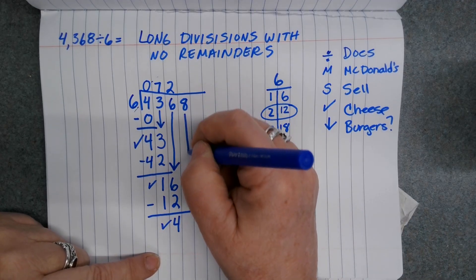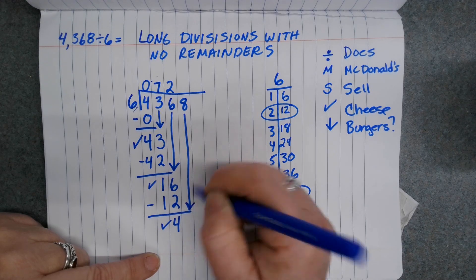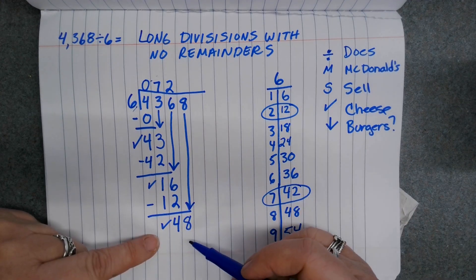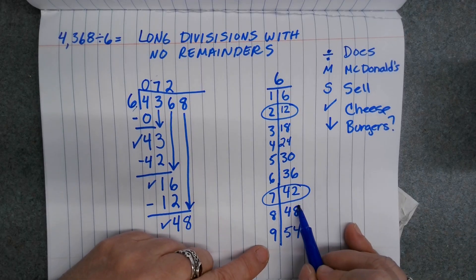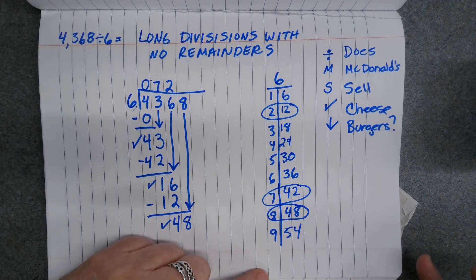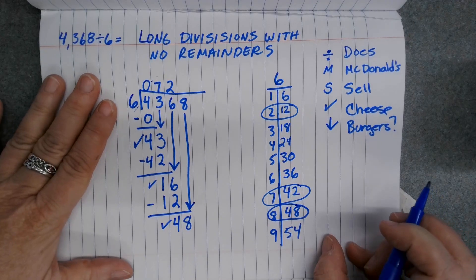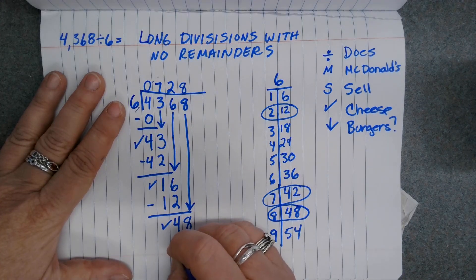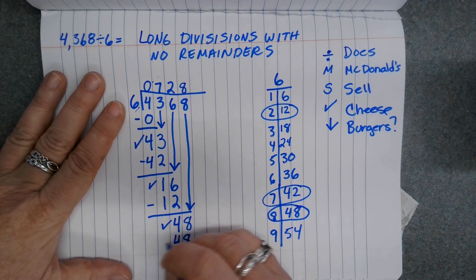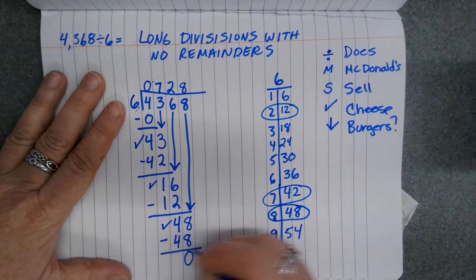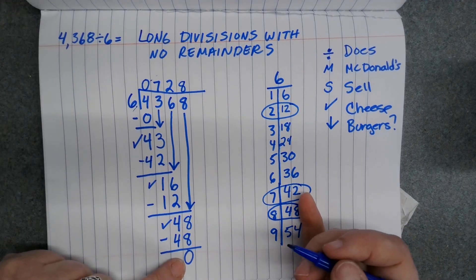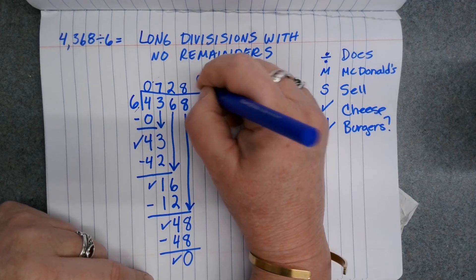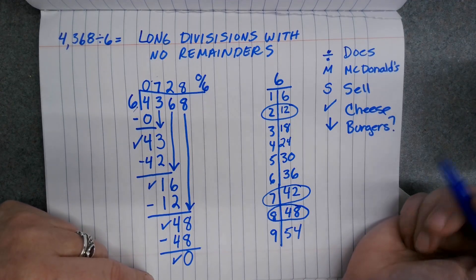Next I'm going to bring down my next number, which is 8. 48 is a big number, so I want to make sure I don't make any mistakes. I'm going to check my chart. I see that 6 times 8 is 48. So I'll put 8 up here. I'll do my multiplication: 6 times 8 is 48. I'm going to subtract, and I have nothing left over this time. Is 0 less than 6? It sure is. So I have no remainder.